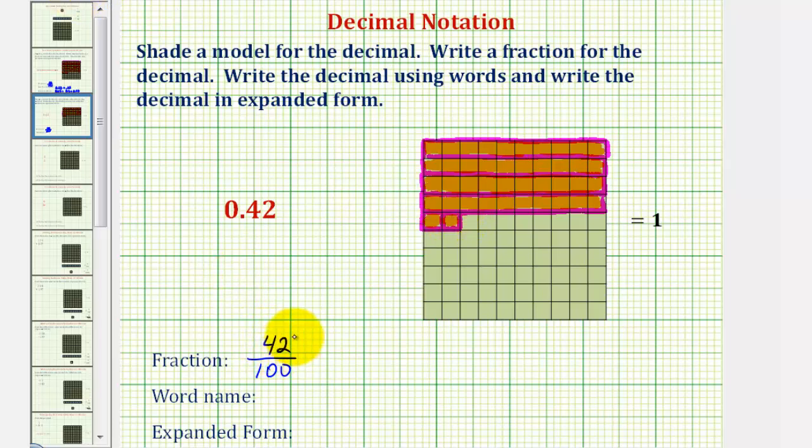This is 42 hundredths, the fraction form of our decimal 0.42. But we can also express this fraction a different way if we used larger partitions. If we cut or denominated one whole into 50 equal partitions instead of 100, it might look like this.